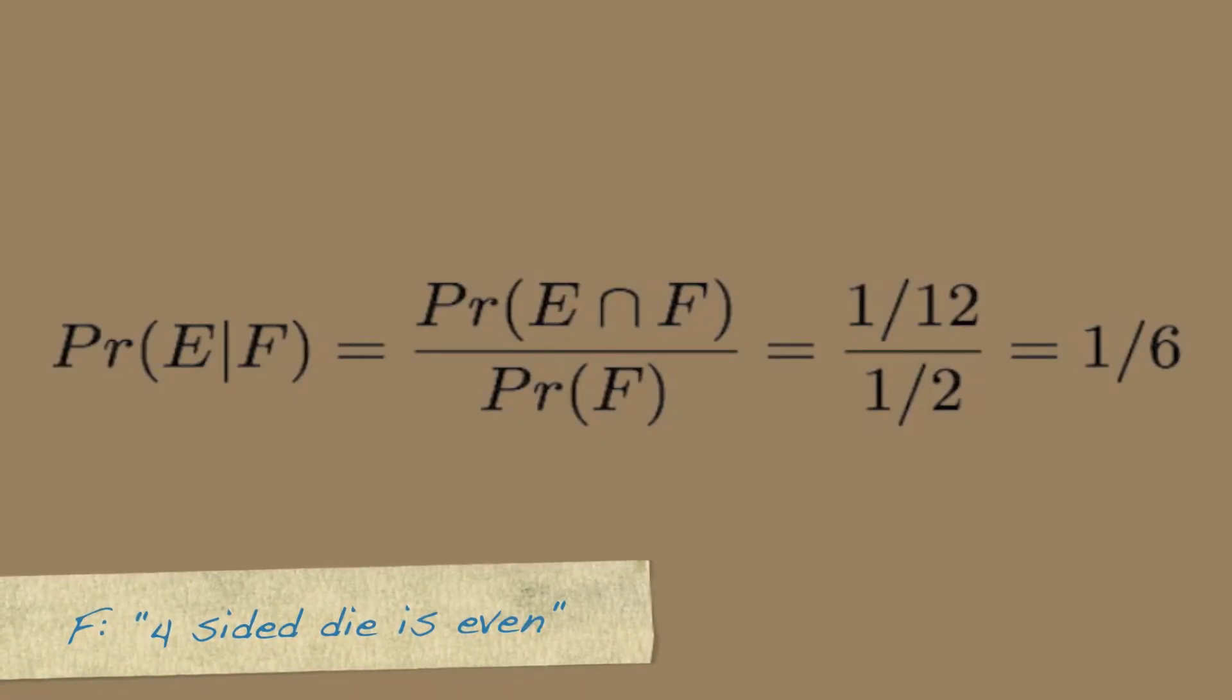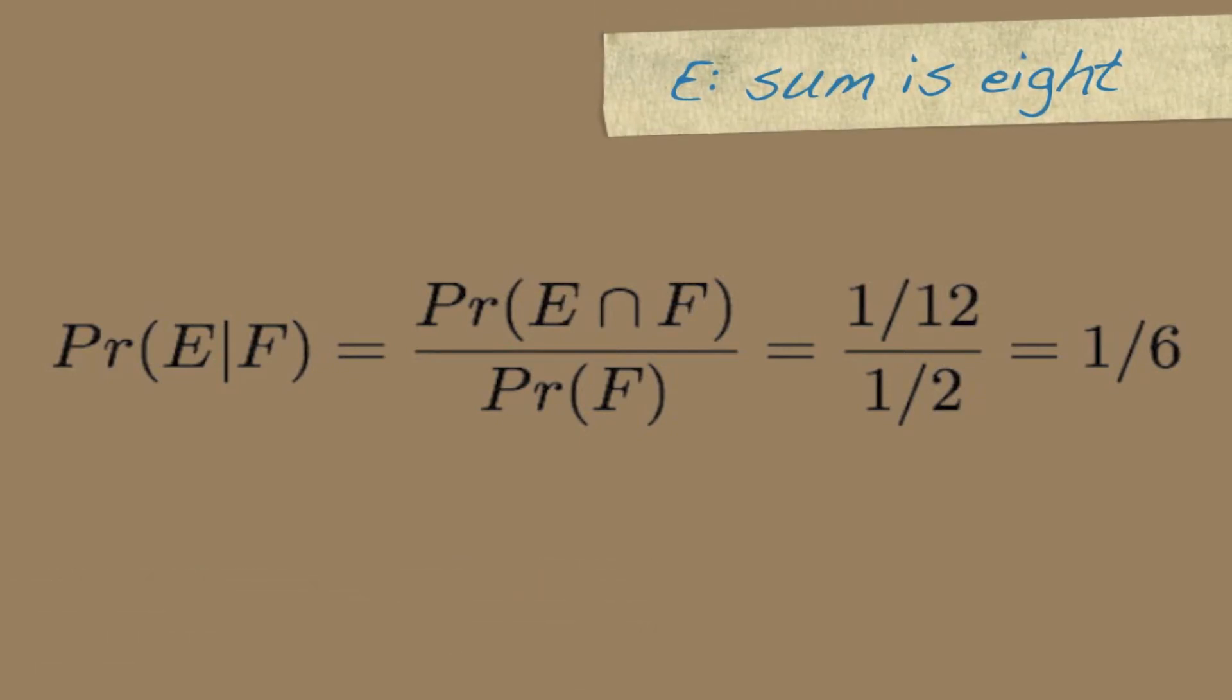Putting these into the conditional probability formula, we end up with a probability of 1 over 12 divided by 1 over 2, which is 1 over 6.